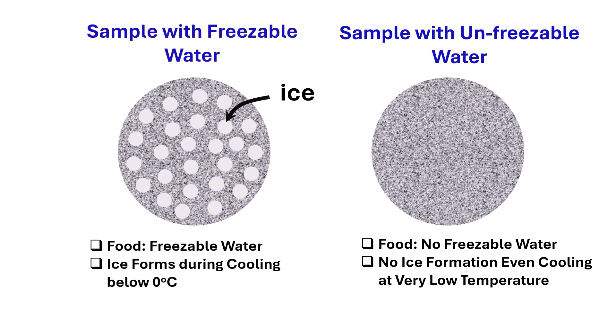In this case, ice formed during cooling below zero degrees C. Sample with unfreezable water is commonly considered as a high solid matrix and sample containing freezable water is commonly considered as low solid matrix.